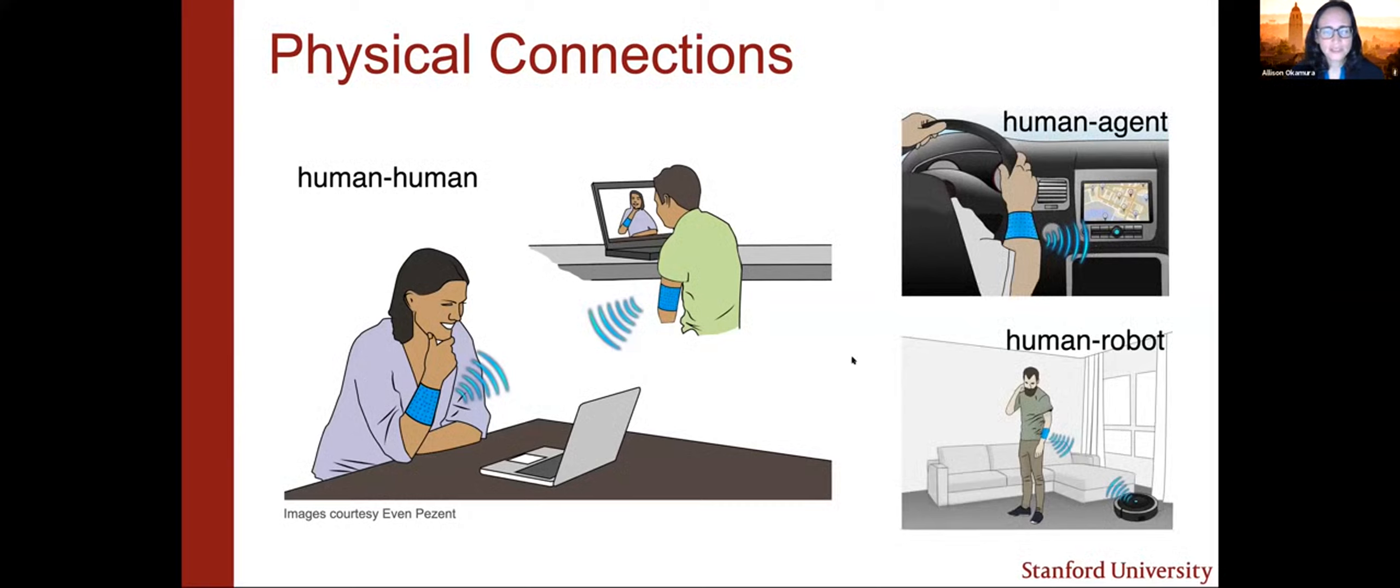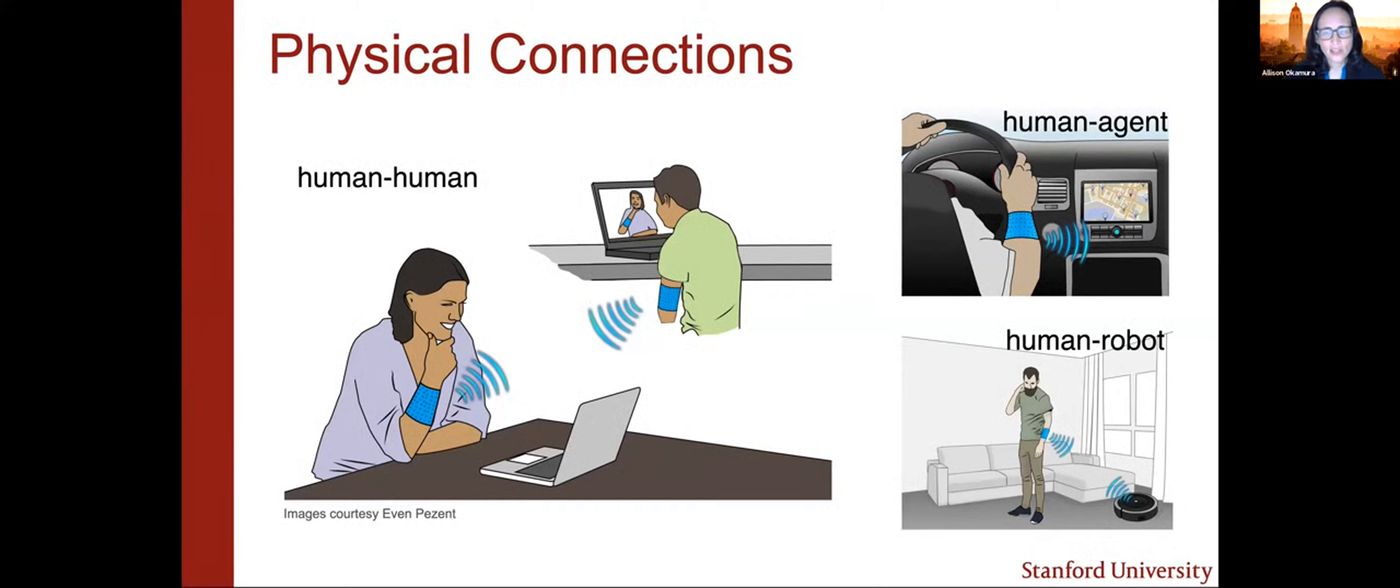So this kind of communication can also be between humans and agents and humans and robots. So these are all physical connections where you may want to be using your hands for other things. And so we need to understand as we move tactile devices away from the hands and onto other places in the body, how does that work?